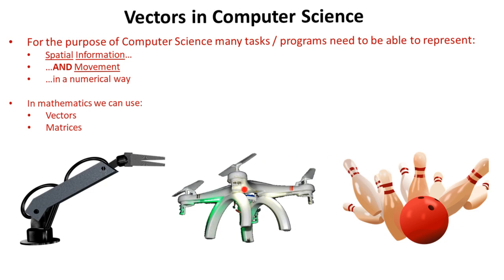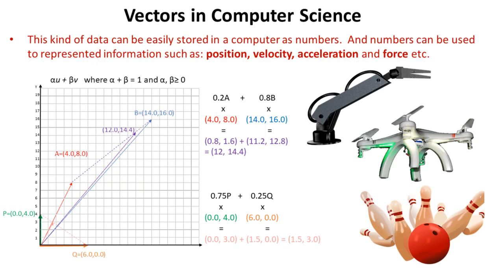In mathematics, we can use vectors or matrices in order to store and represent this information. This kind of data can be easily stored in a computer program as numbers, and numbers can be used to represent information such as position, velocity, acceleration, and force.